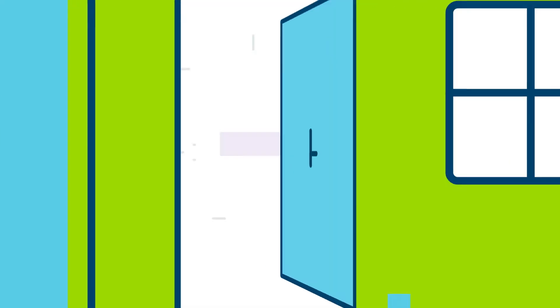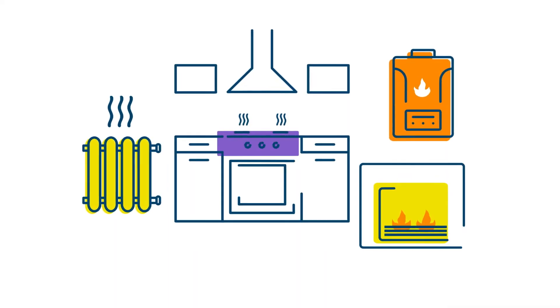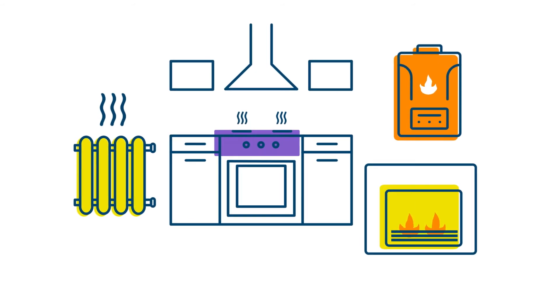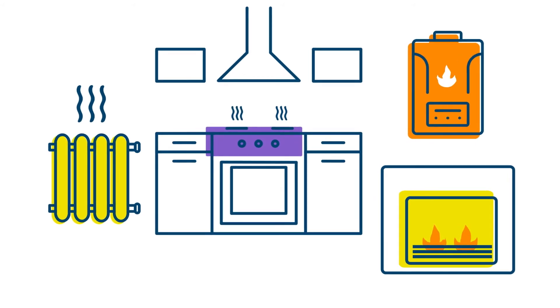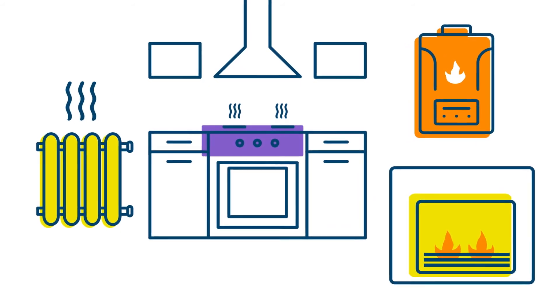Hydrogen appliances including boilers, fires and cookers have already been developed, meaning UK homes can be converted with minimal cost and disruption to customers, just like they were in the 1960s.